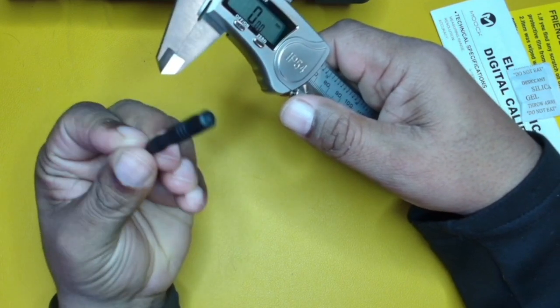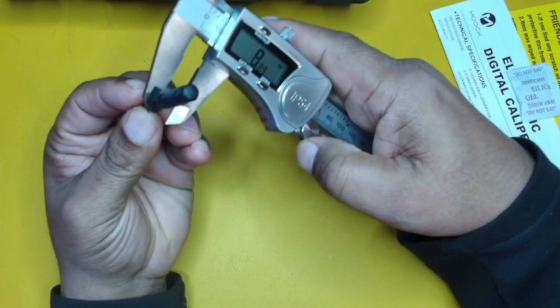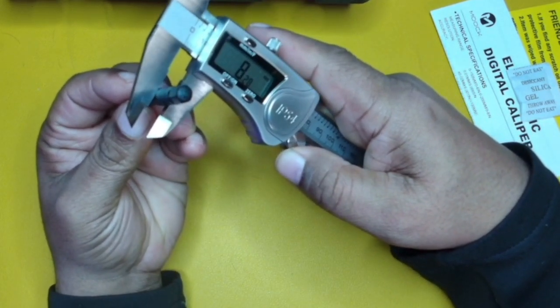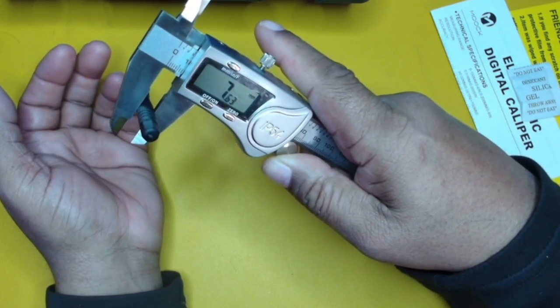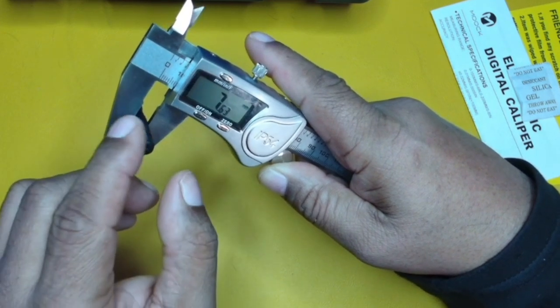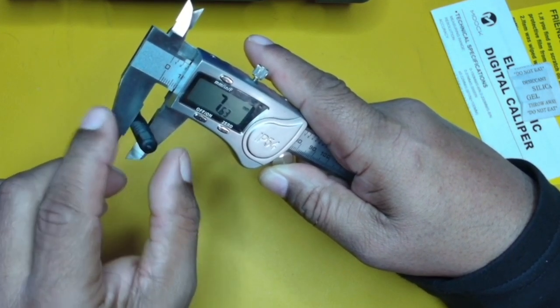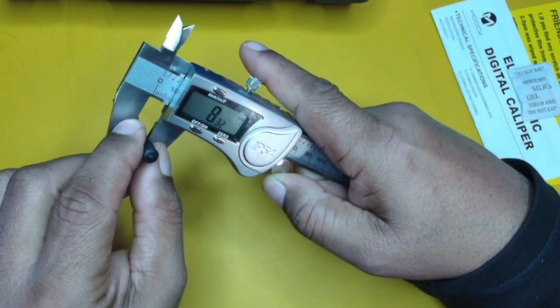So if I wanted to measure, say, for instance, this screwdriver, I could just open this up like this, put this inside of the jaws, and it will tell me that that is 7.63 millimeters. So this is 7.63 millimeters if you're measuring something from the exterior.